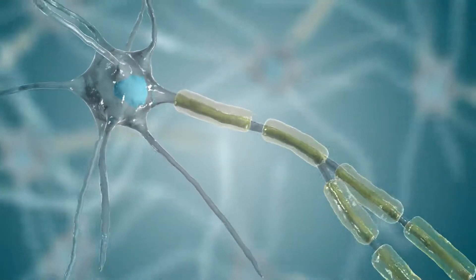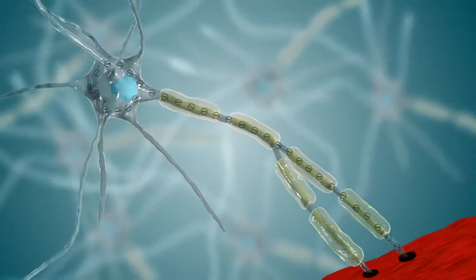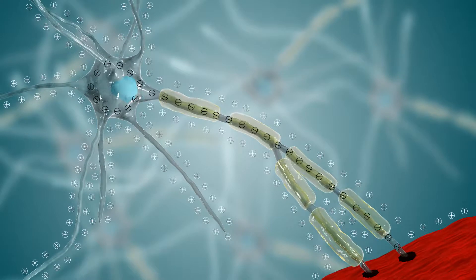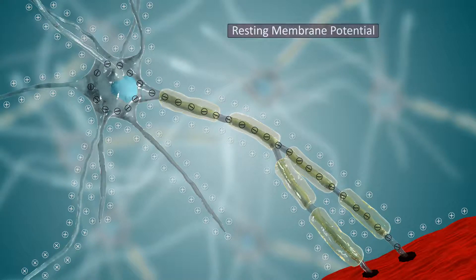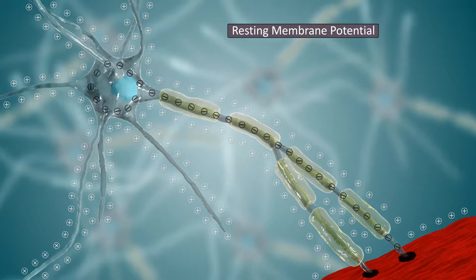Since the inactive cell membrane is negatively charged inside and positively charged outside, it is considered to be polarized. The voltage created by this distribution of ions is known as its resting membrane potential and is maintained everywhere on the cell membrane. The excitable cell remains in this state until it receives a stimulus.